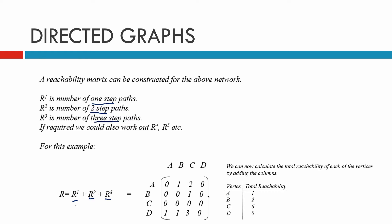We haven't done the one-step, two-step, and three-step separately — we've just done them all as one here. Adding up the columns, you get one for A, one plus one is two for B, two plus one plus three gives you six for C, and D has zero.